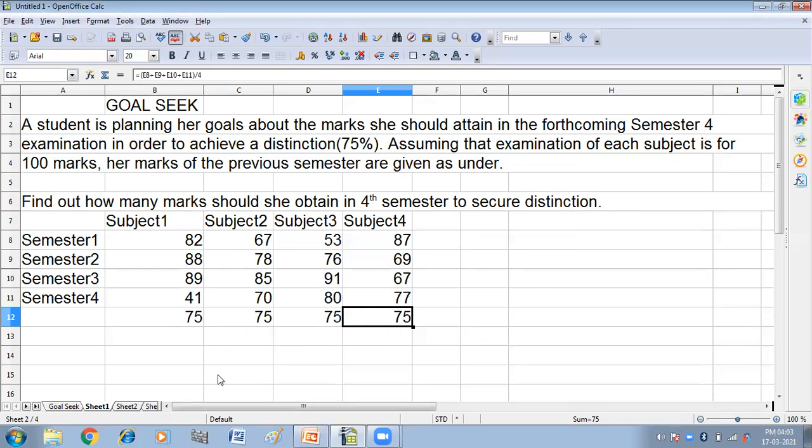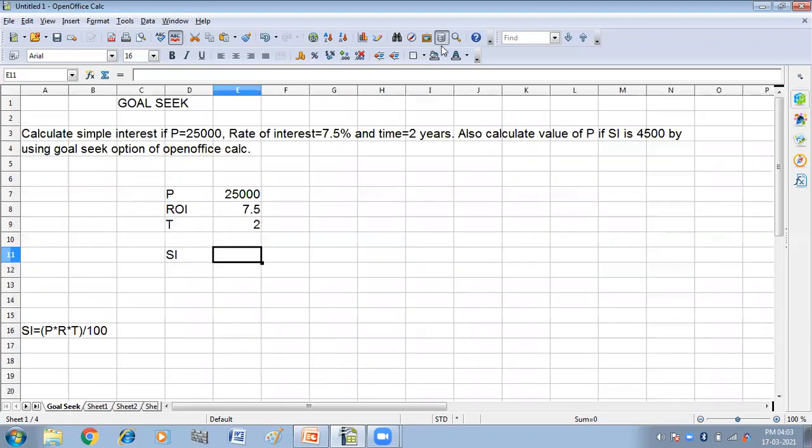So let us do one more example. Calculate the simple interest if the principal is 25,000, rate of interest is 7.5%, and the time is 2 years. So let us put the formula for that.